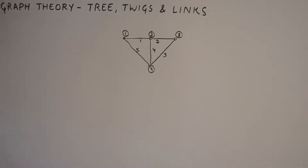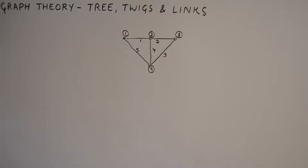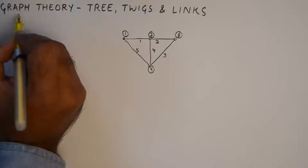Hello friends, welcome to another tutorial in network analysis and synthesis. Today we'll discuss graph theory and talk about some key terms: trees, twigs, and links. These are pretty basic terms as far as graph theory is concerned, but a clear and concise understanding of these terms is essential to perform various numericals and objective type questions in the examinations.